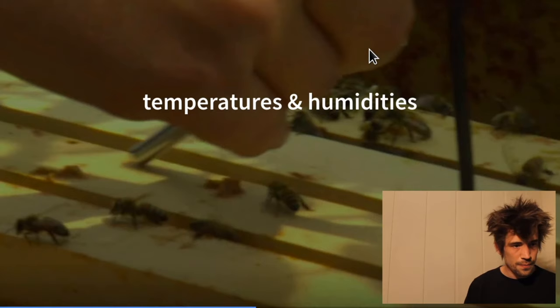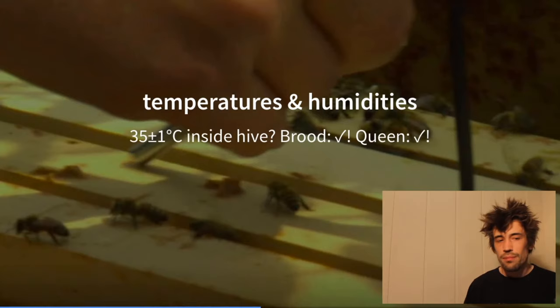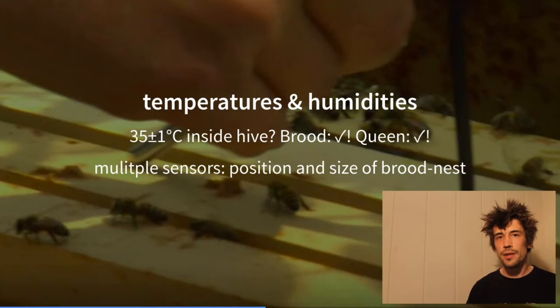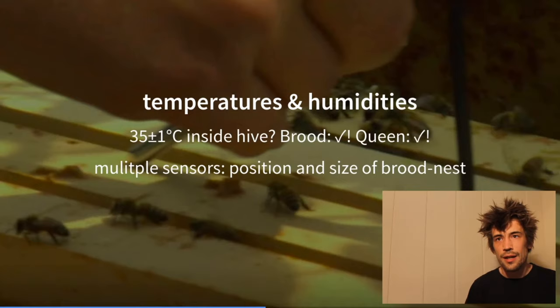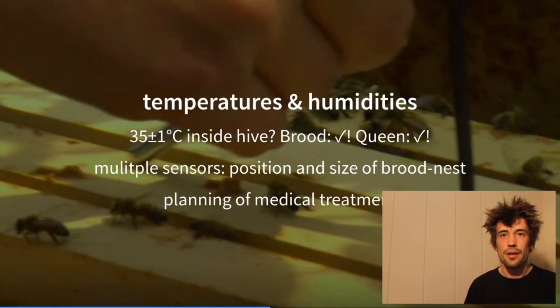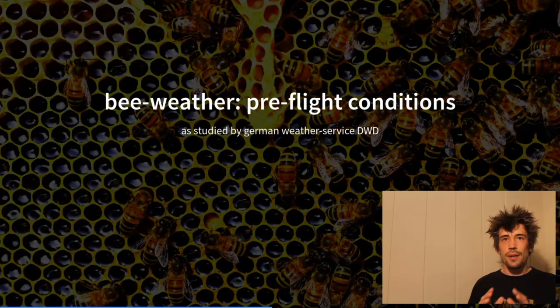Now let's talk about temperatures. When it's around 35 degrees within the hive you can indicate there must be a brood, because brood is always kept at 35 degrees and where there's brood there must be a queen, which is necessary for the bee population staying alive. Using multiple thermometers at different positions as an array within the hive, you can see where the brood nest is located. In winter you can plan medical treatment because some medication must be applied when there is no brood.